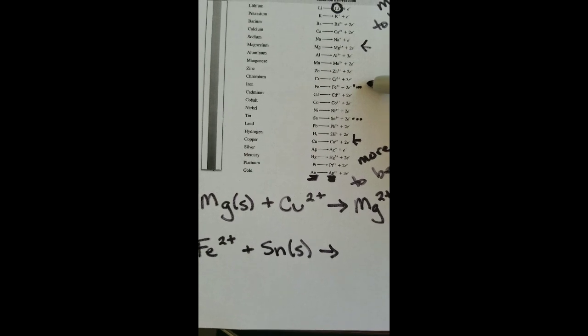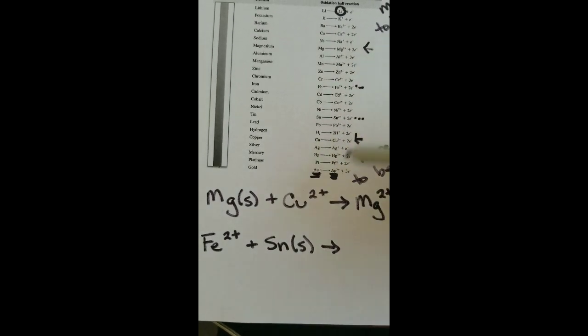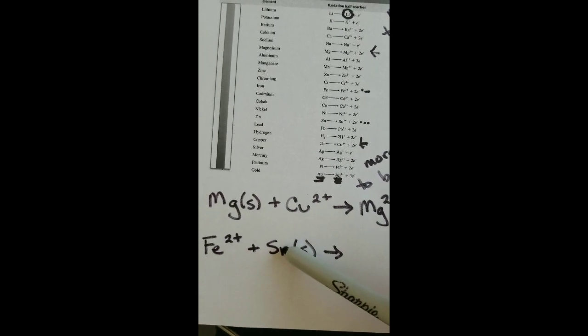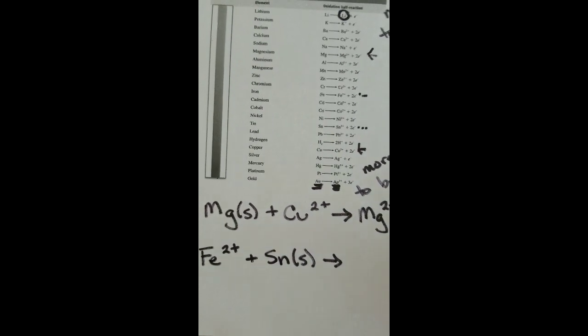So iron is more likely to be oxidized because it's higher. And tin is more likely to be reduced. But what I have is already the most likely option. My iron has already given up electrons. My tin already has as many electrons as it wants. So what's going to happen here is nothing.